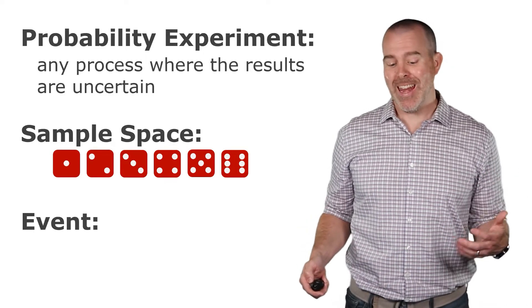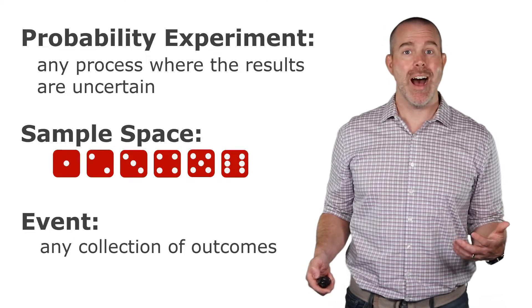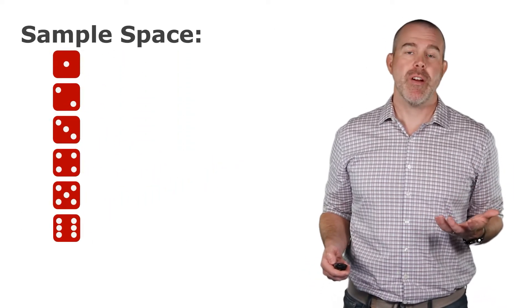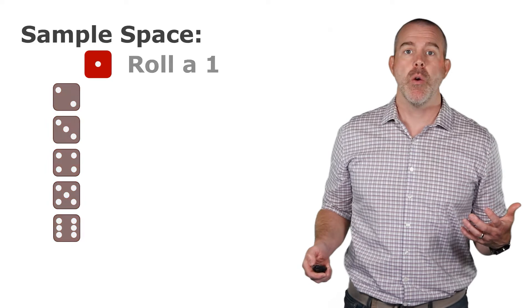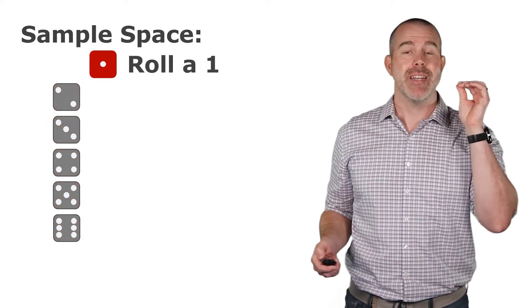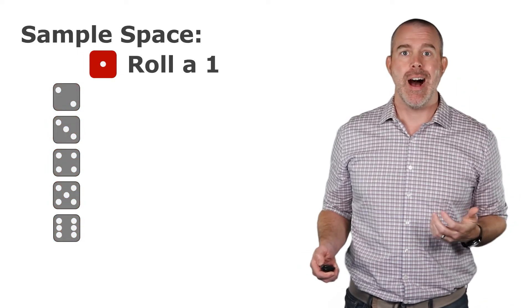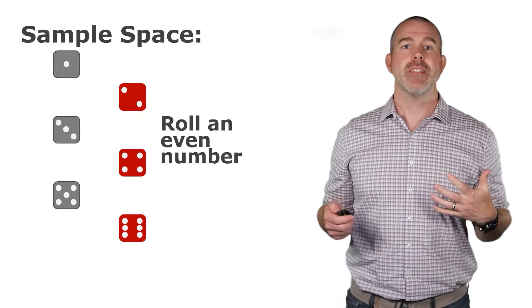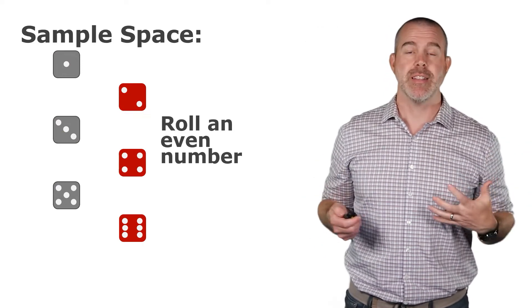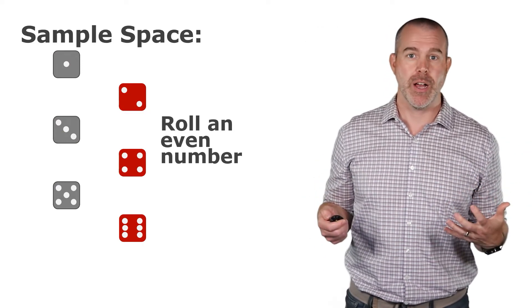An event is any collection of those outcomes. So if we think of our sample space with the six sides of a single die, the event 'we roll a one' is a simple outcome, but it's an event. Different example: maybe we want to know we roll an even number. Those three different outcomes constitute a single event — it's a collection of outcomes.